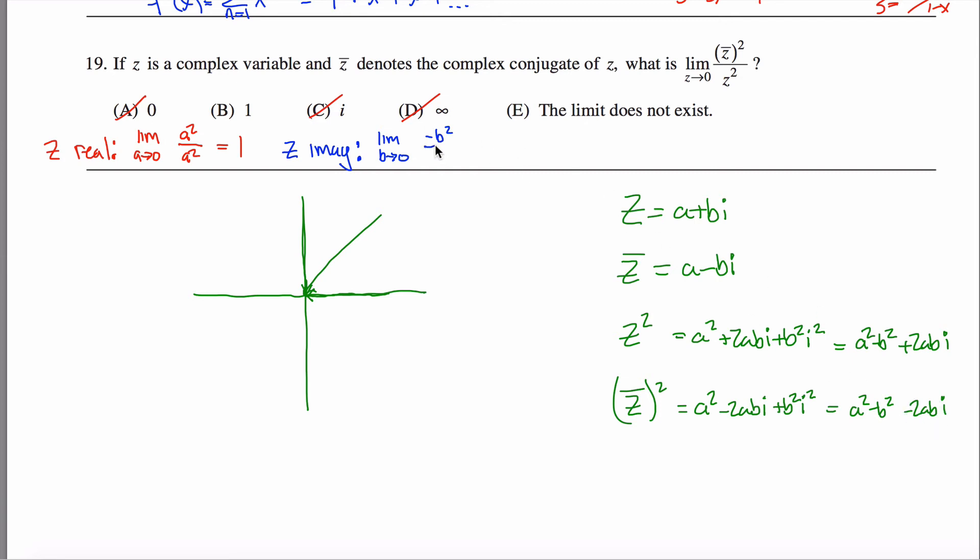And then if I stare at this thing with all the b's, or all the a's as 0, I get again negative b squared. So this limit is also equal to 1.